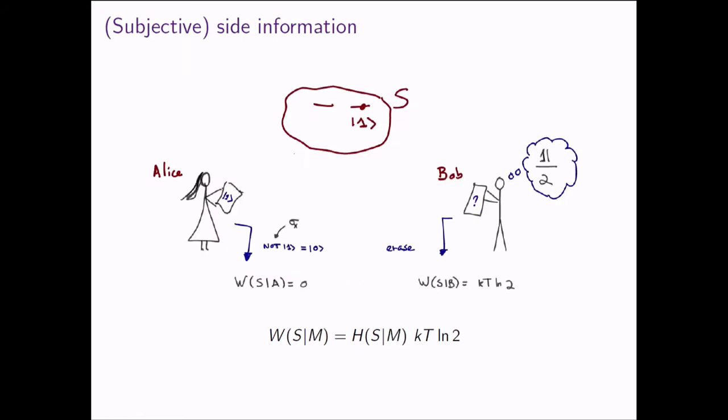Information is also subjective. If I prepare a system in state one and tell Alice it's in state one, she can apply a reversible operation — like a NOT gate — and erase it for free. But if I tell Bob nothing, he has to apply the full erasure procedure, which costs him kT log 2. The work cost of erasure depends on the entropy, taking into account the memory of the agent.